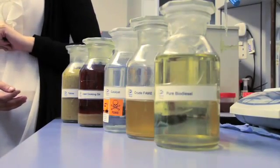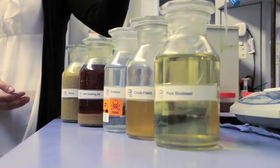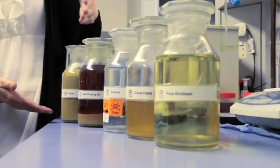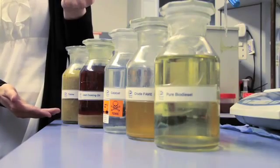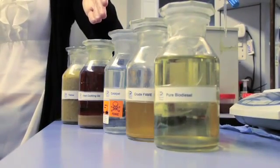Here is an example of some of the starting materials that we have through the process. The first one we have is the tallow. We then go through to the used cooking oil and we also have an example here of the catalyst which is used during the reaction.